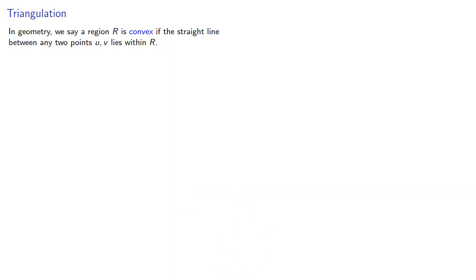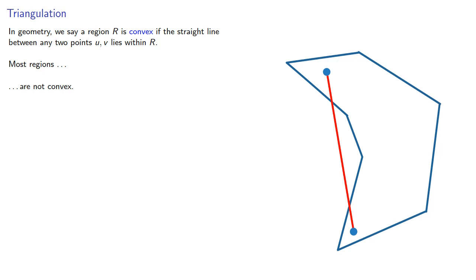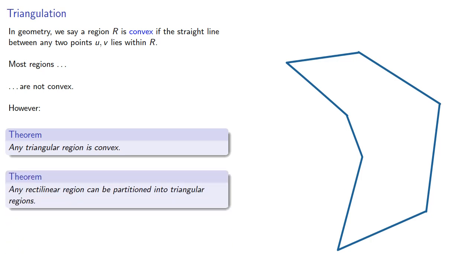In geometry, we say a region R is convex if the straight line between any two points lies within the region. Most regions are not convex. However, any triangular region is convex, and any rectilinear region can be partitioned into triangular regions.